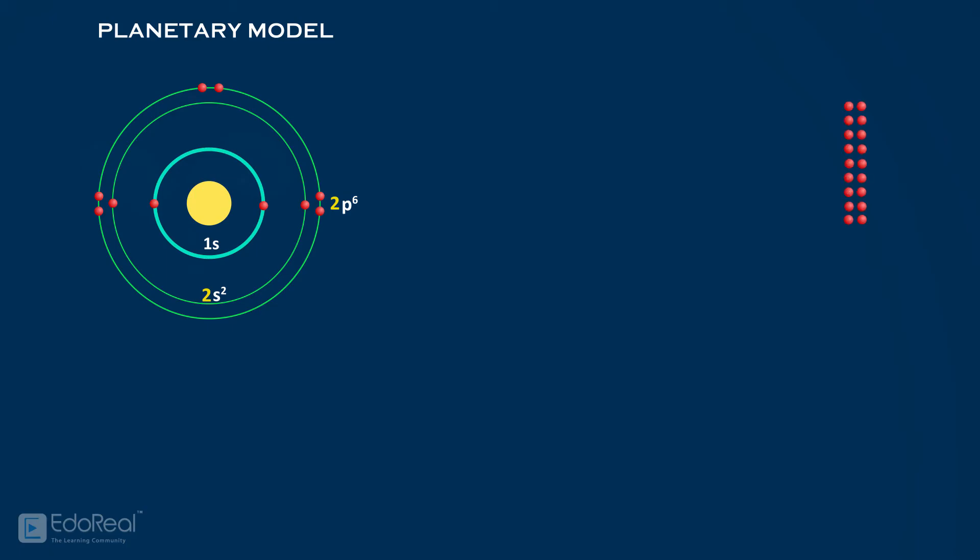As these 18 electrons cover huge space beyond 2s2, 2p6, they are represented as 3s2, 3p6, 3d10.